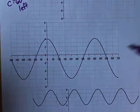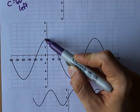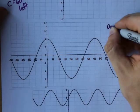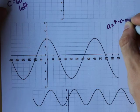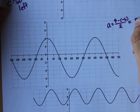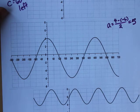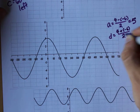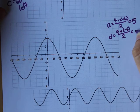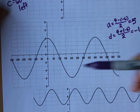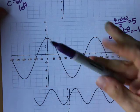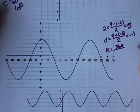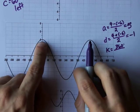Alright, what do we start with? The amplitude: max 4 minus min negative 6, divided by 2. That's 10 divided by 2, so the amplitude is 5. The D value — the vertical middle — uses the same formula but with plus between them: 4 plus negative 6 divided by 2 gives me negative 1. That's the vertical middle of negative 1, and the curve goes 5 above and 5 below it. For the K value, you need 360 degrees divided by however far apart the two maxes are.